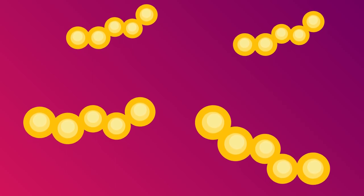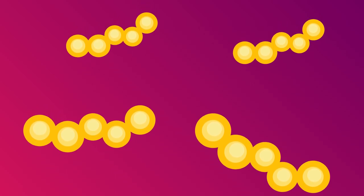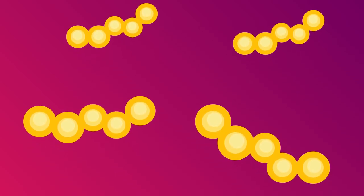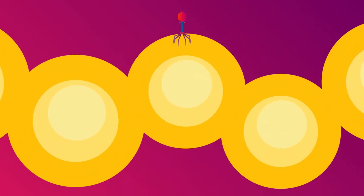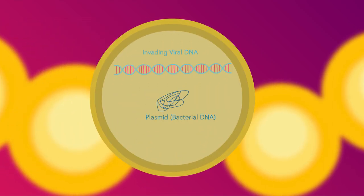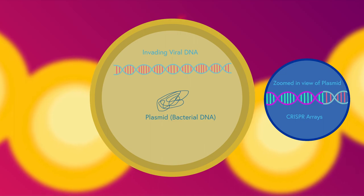The origins of CRISPR technology are quite humble. It was discovered that bacteria had a natural mechanism for protecting themselves against invasion from viruses. When invaded by a virus, bacteria capture some of the viral DNA and store them in segments of DNA called CRISPR arrays.